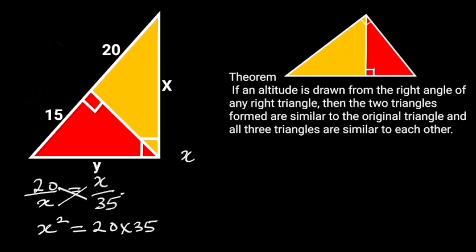20 times 35 is 700. Taking the square root of both sides will give us x is equal to square root of 700, which is equal to 10 root 7.